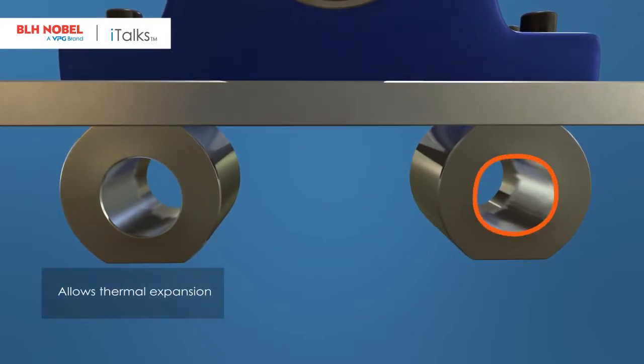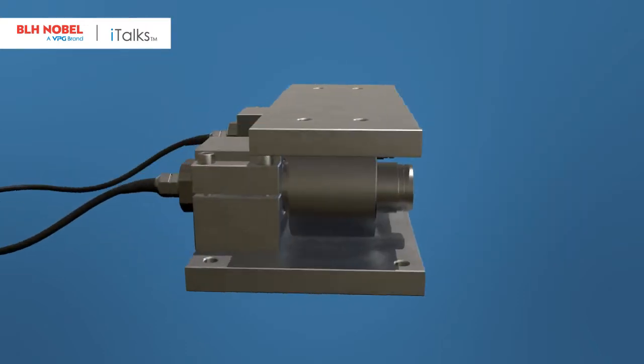One of the load cell mountings has an oval shape that allows for thermal expansion of the mechanics perpendicular to the roller axis without affecting the measurement accuracy.